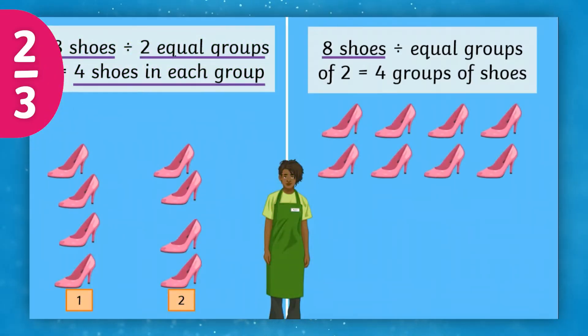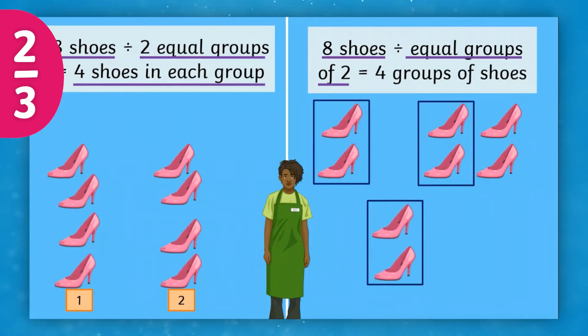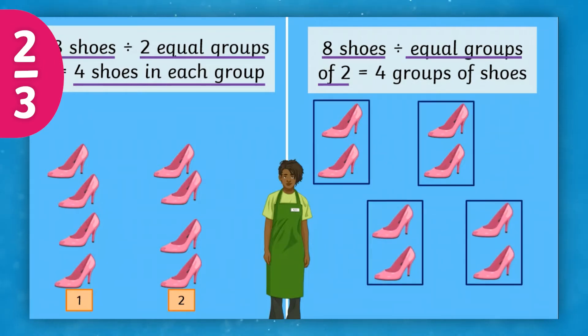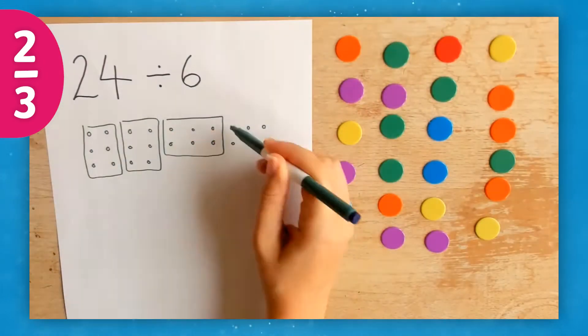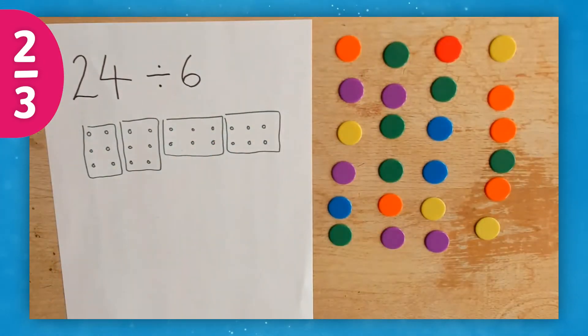In the second lesson, we learn to represent division using grouping. When using grouping, the divisor tells us how many objects are in each equal group, and the quotient is the number of groups.